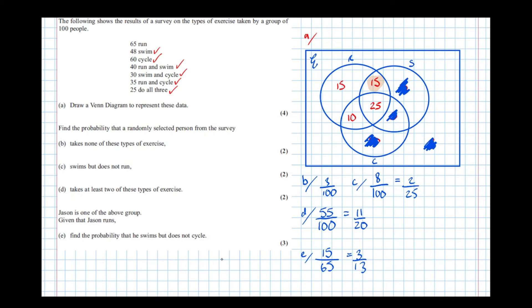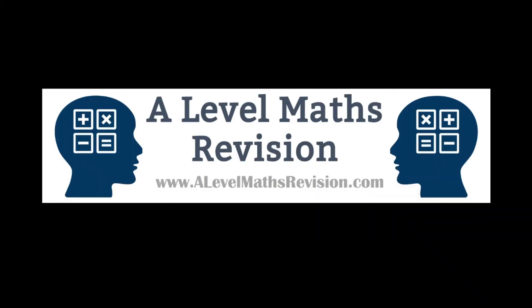When finding conditional probabilities, given that he runs, just get rid of everything that's not running. In an exam you probably don't want to scribble things out — if you do, use light crossings out in pencil so you can rub them out if you need the diagram later. For more videos like this, go to a-levelmathsrevision.com or subscribe to our YouTube channel. If you liked this video, please click the thumbs up.